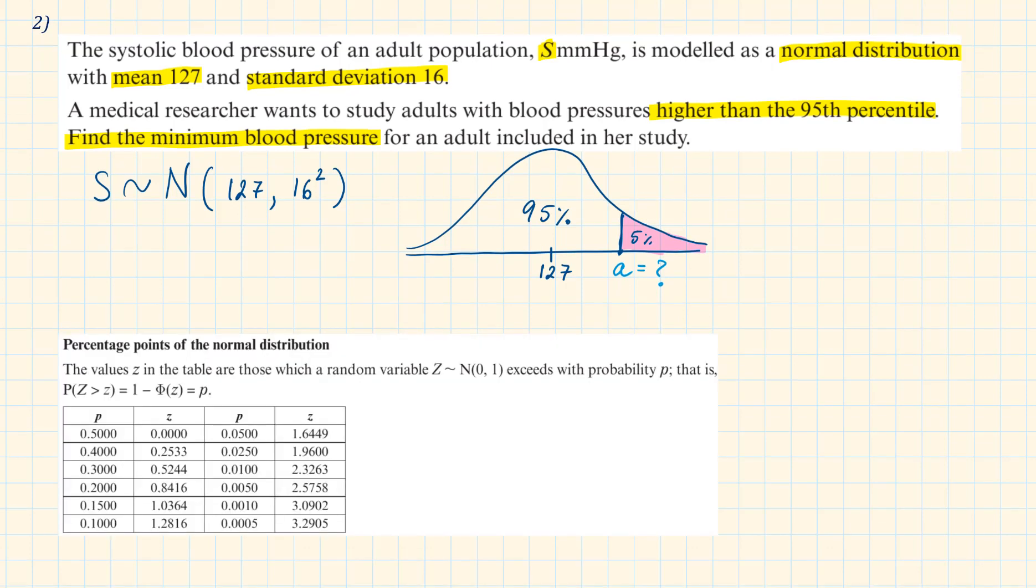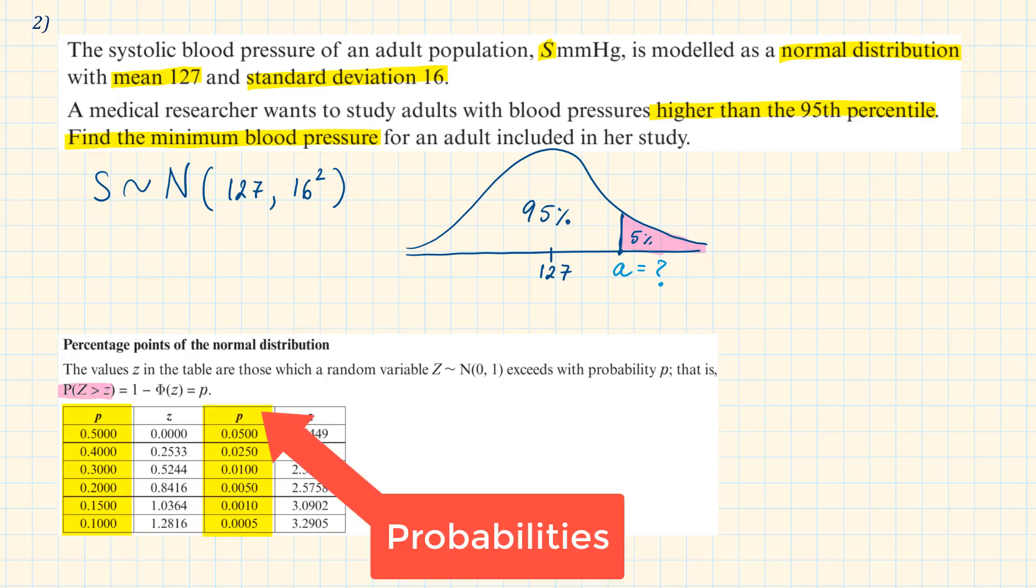To solve this we can use the table of percentage points of the normal distribution. This table can be found at the end of the textbook and also in the formula booklet that is given out in the new A level exam. This table lists a selection of probabilities for the upper tail and their corresponding z values. Looking for the 5%, the corresponding z value for this is 1.6449.